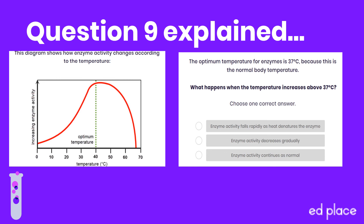Question nine: the diagram shows how enzyme activity changes according to temperature. The optimum temperature for enzymes is 37 degrees, because this is the normal body temperature. What happens when the temperature increases above 37 degrees Celsius? The options were: enzyme activity falls rapidly as the heat denatures the enzyme; enzyme activity decreases gradually; or enzyme activity continues as normal. Even if you didn't know the answer, you should be able to see from the graph that there is a rapid decline down to zero activity. Therefore the answer is: enzyme activity falls rapidly as heat denatures the enzyme.